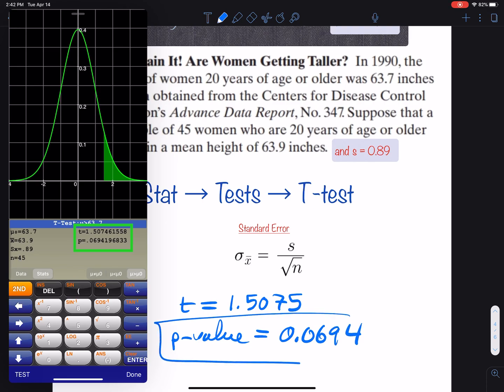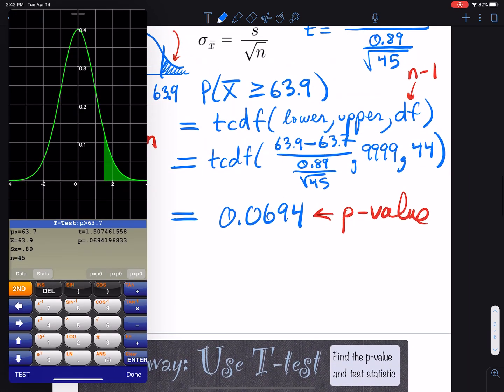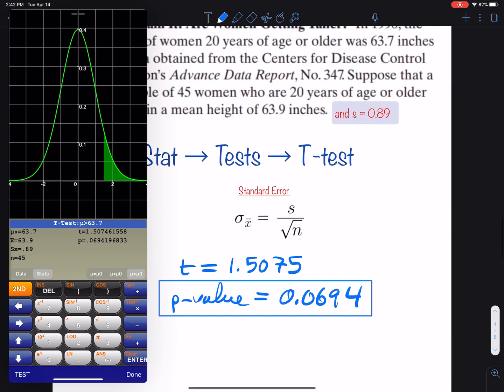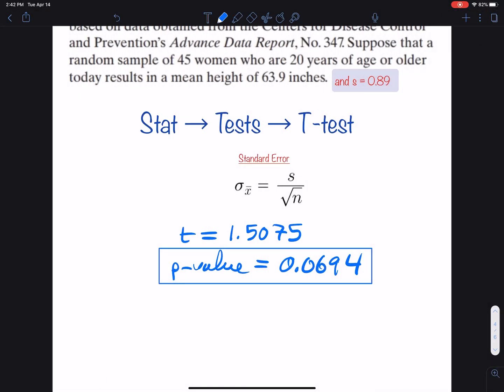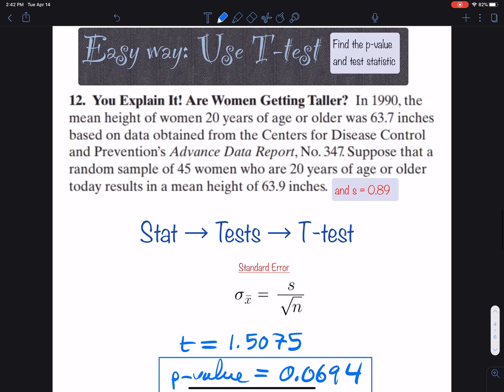Take a look at that p-value - does it look familiar? 0.0694, the same answer from both methods. That's how you find the p-value, the easy way and the hard way, on a TI-84.